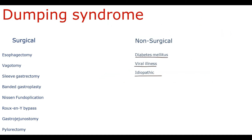The idiopathic cause of dumping syndrome is related to impairment in function of the vagal nerve. Because the vagal nerve is involved in nearly all mechanisms of gastrointestinal tract regulation, this leads to rapid gastric emptying with development of dumping syndrome.